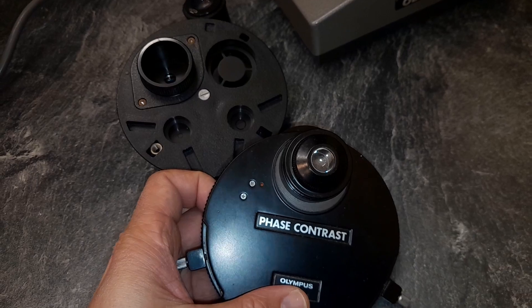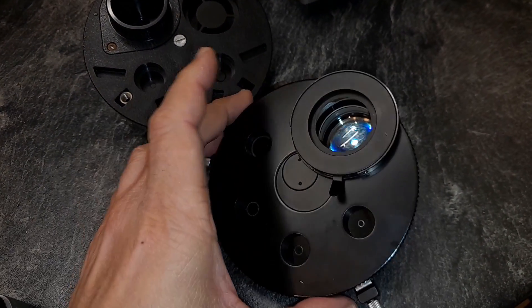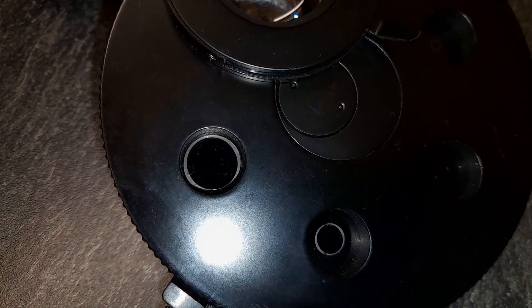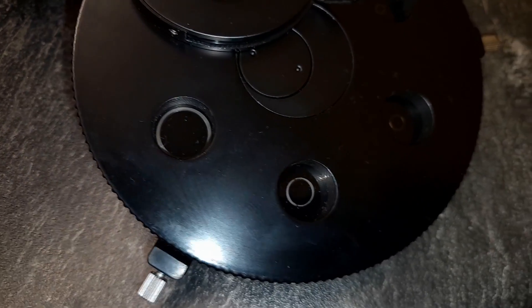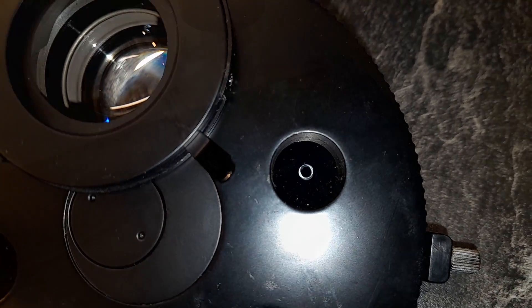Now, this condenser here is made of metal. It's significantly heavier. And look, it also has more phase annuli for different magnifications as well. And in this case, there is a glass disc in there, which was blackened out.